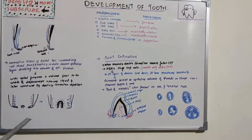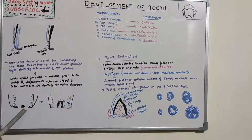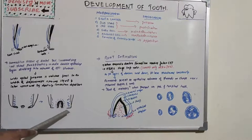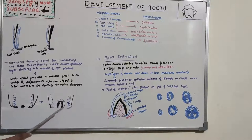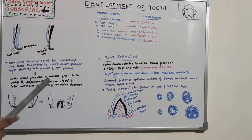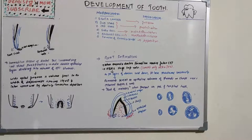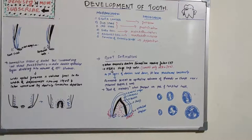On the pulpal surface of the dividing epithelial bridges, dentine formation starts. On the periphery of each new opening, root development then follows in the same manner as described for a single-rooted tooth. This is how multi-rooted tooth formation proceeds through the epithelial tongue-like structures and root splitting.